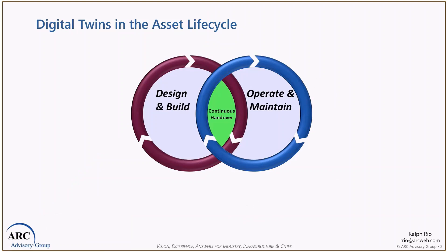ARC's view of asset lifecycle involves two main areas of business processes. First is design and build. This could be for a greenfield, but the vast majority of the time it's for an upgrade involving the design and construction of an asset. It has its own set of unique business processes and key metrics — usually around building on time, in spec, and in budget, completing that project on time.